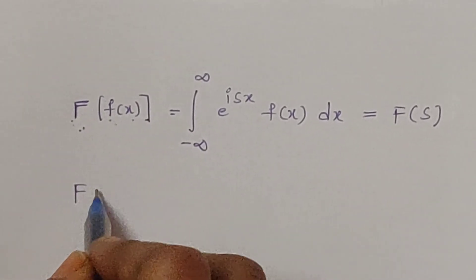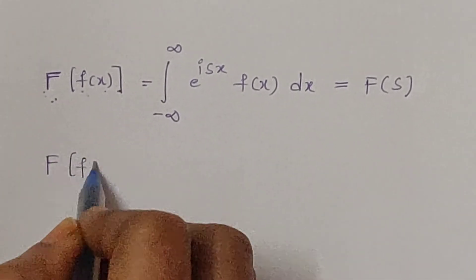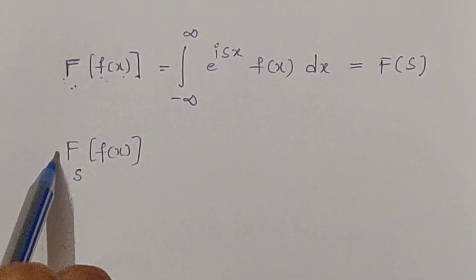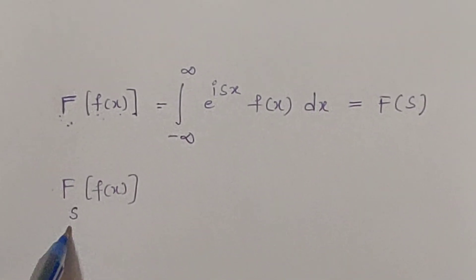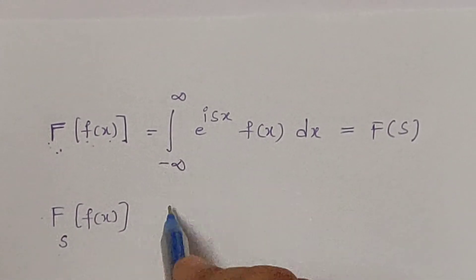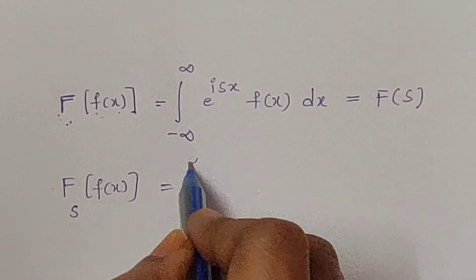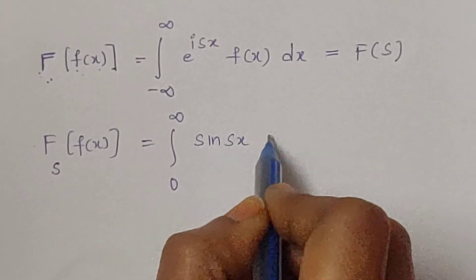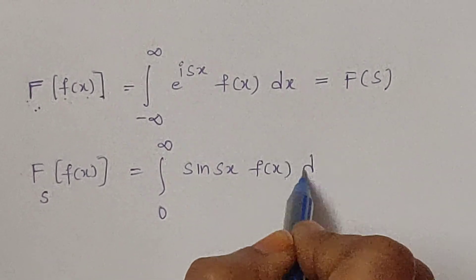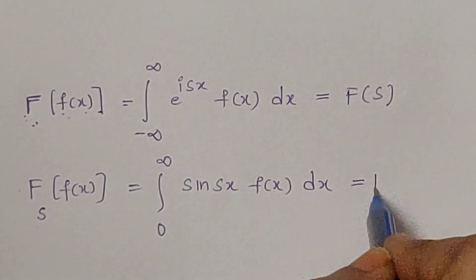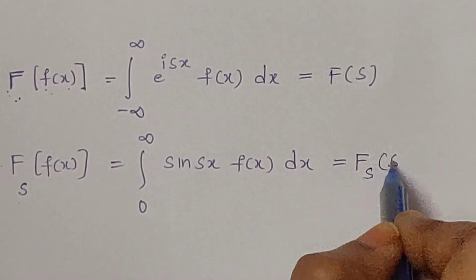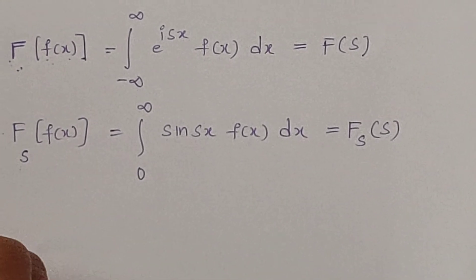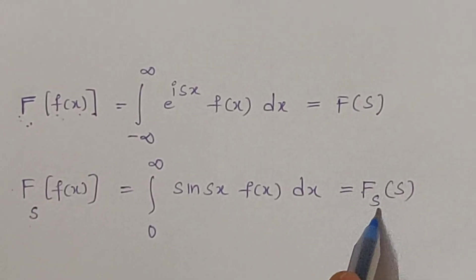The Fourier sine transform, denoted capital F_s of f of x, is defined as the integral from 0 to infinity of sine(sx) times f of x dx. It is also denoted as capital F_s of s.